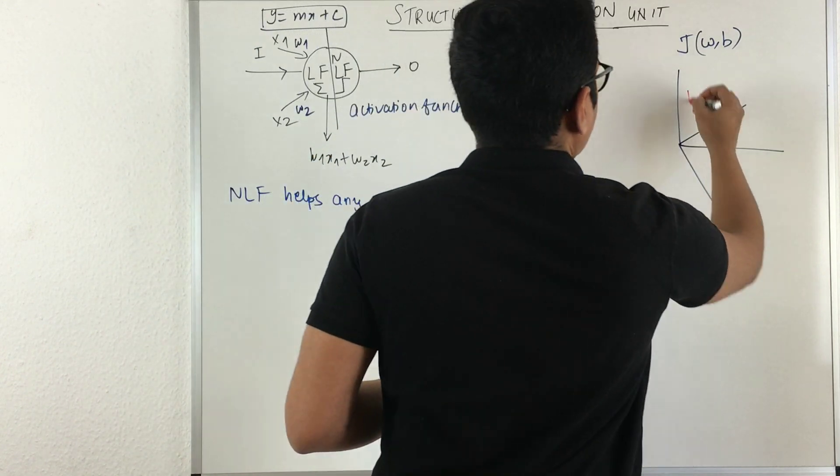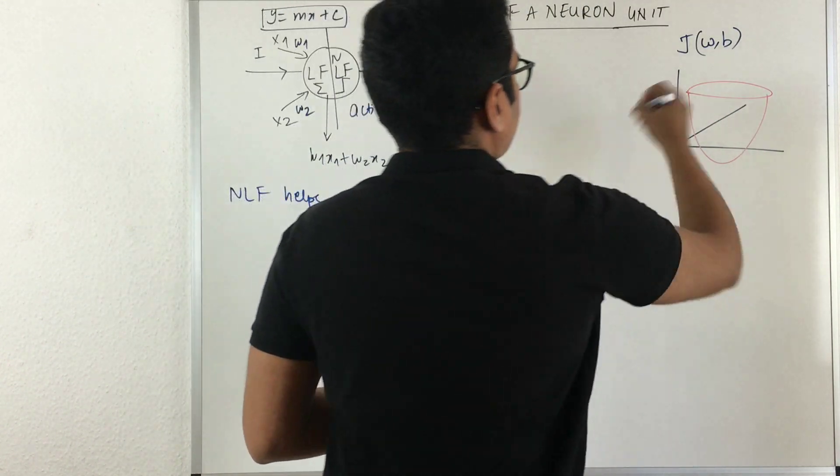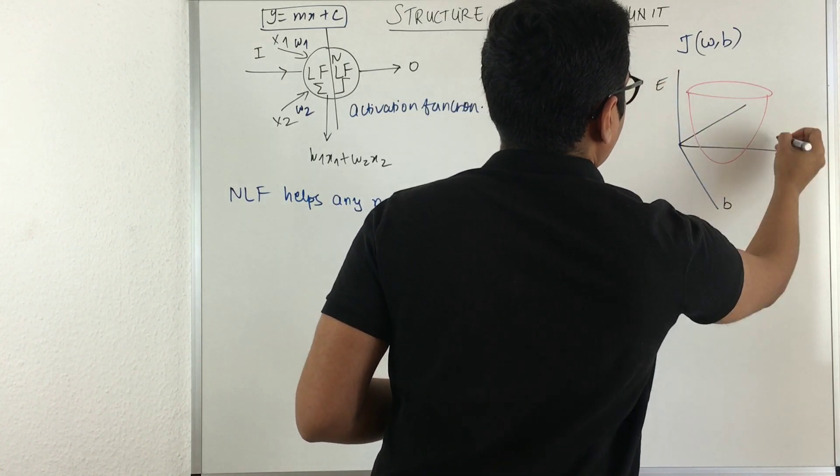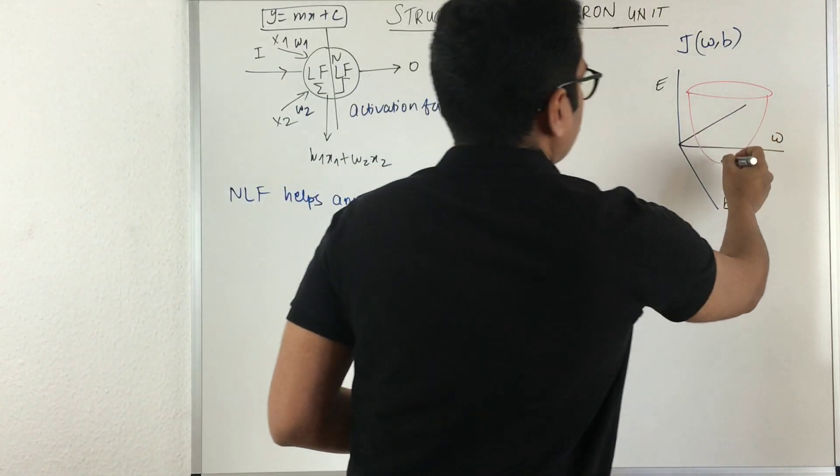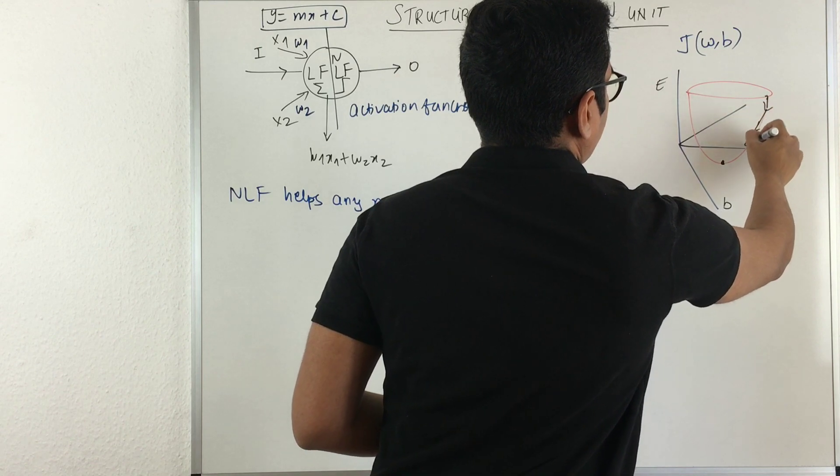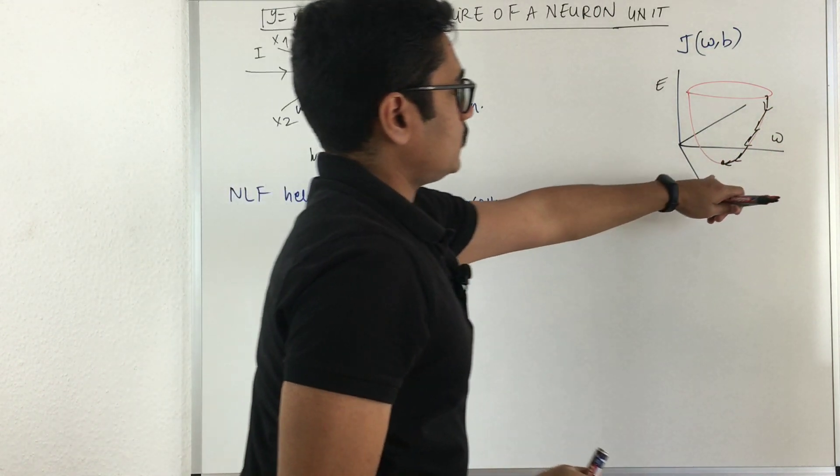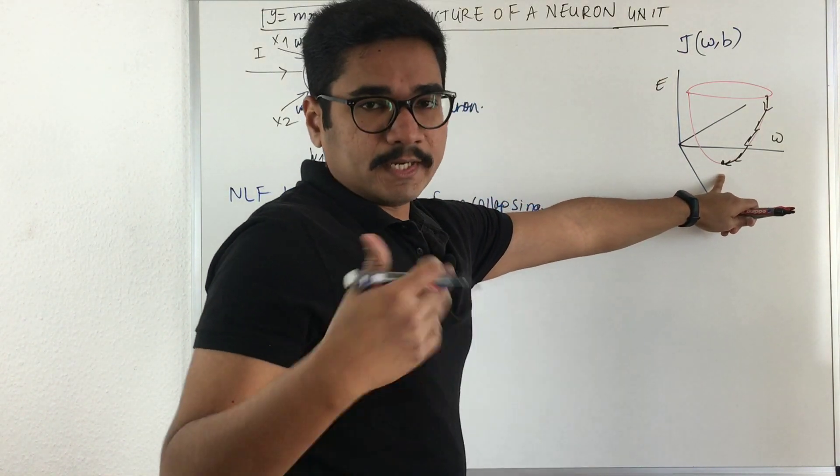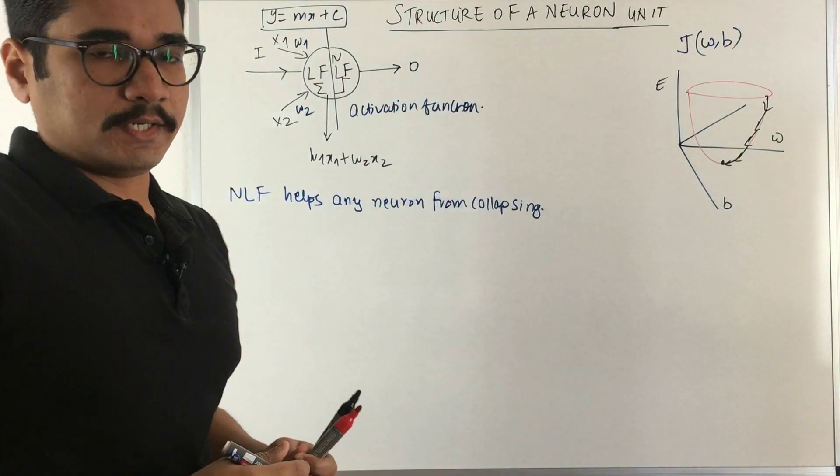On this axis you have the error, you have b, and you have the weight. What you do is you basically calculate the gradient and you start from this point to this point to this point and you converge at this particular step where the error is equal to zero. This is our major goal whenever we do gradient descent or this is also implemented in neural networks.